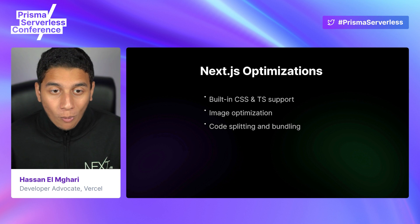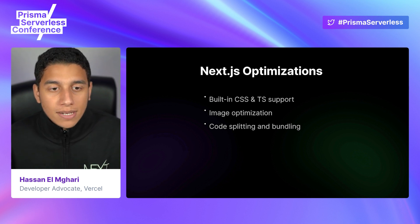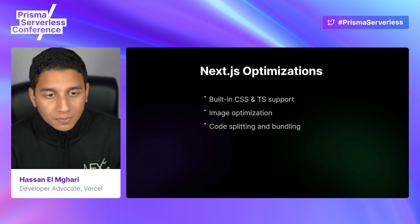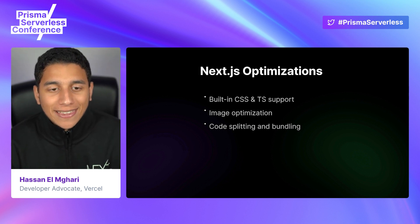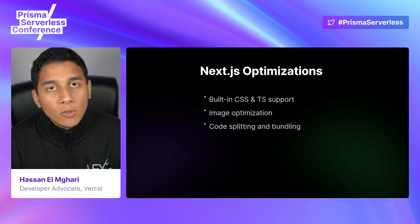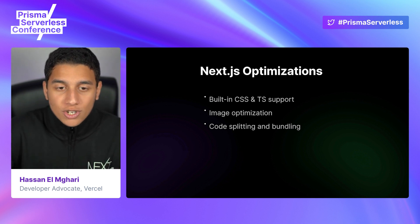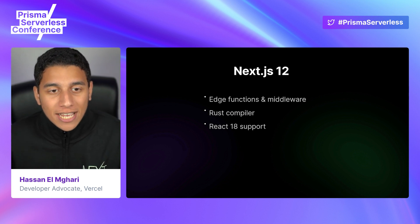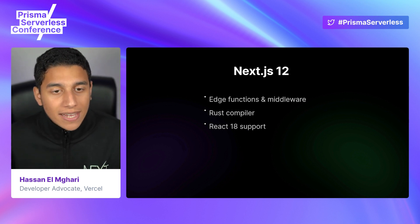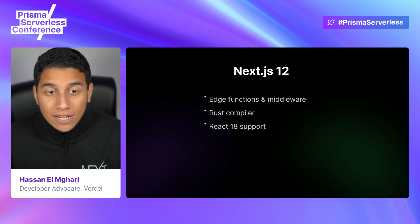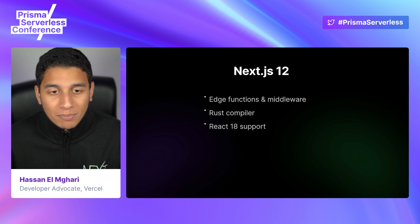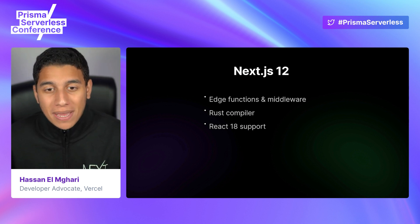In terms of support and optimizations, Next.js comes with built-in support for your favorite developer tools, including TypeScript, CSS and JS libraries, and CSS utility frameworks like Tailwind. It also gives us an image component that does image optimization and lazy loading right out of the box. With automatic code splitting and bundling, Next.js only loads the JavaScript for the current page that you're on — less JavaScript is shipped to the browser, making your application more performant. With the newest release of Next.js 12, there is now support for middleware, which allows you to run code closer to your users at the edge and enables things like A/B testing and feature flags. There's also a brand new Rust compiler that gives us three to five times faster refresh and builds, and React 18 support for things like Suspense and React server components.